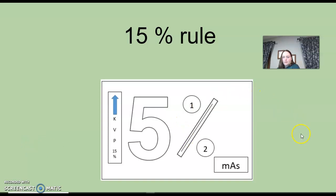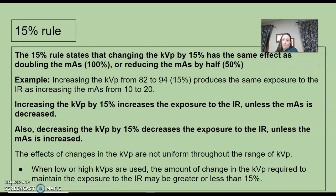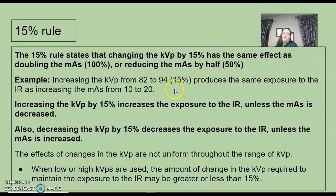Quick lesson on the 15% rule. This one's super easy. What is the 15% rule? Basically, it's saying if you change the KVP by 15%, it has the same effect as doubling the mAs or reducing the mAs by half.